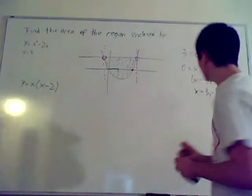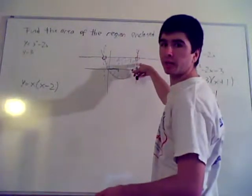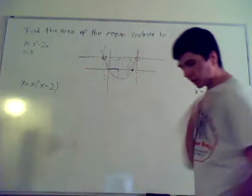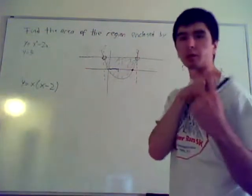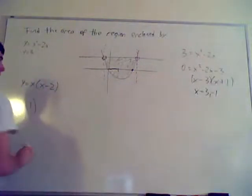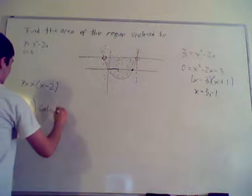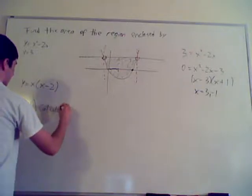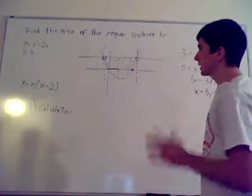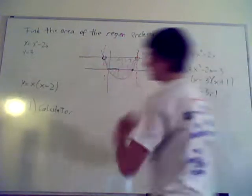So what you want to do then is find your area from negative 1 to positive 3. That's your two little enclosed shapes. Here are two methods to do it. Method number one is the calculator.